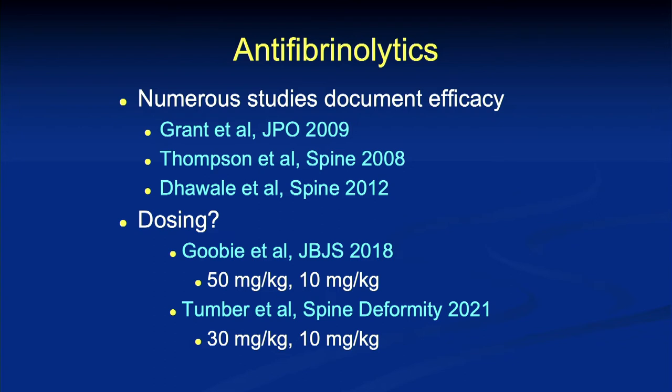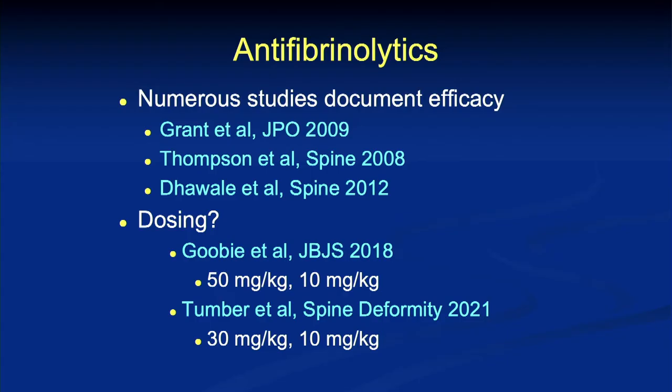We recognize that antifibrinolytics have been around for over 15 years and are going to decrease blood loss. A lot of the initial work, which eventually got carried over into AIS, was done in this neuromuscular population. But early on, we were really underdosing — using loading doses of 10 with maintenance of 1. That's not going to do anything. More recent studies suggest a loading dose of 50 mg/kg with a maintenance of 10, or 30 mg/kg with a maintenance of 10. After discussion with our anesthesiologists, we now follow 30 and 10, and it absolutely makes a difference. Make sure you dose antifibrinolytics correctly.